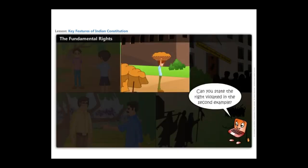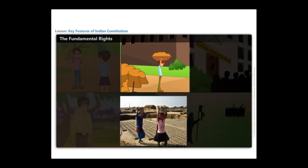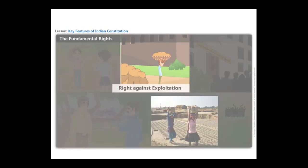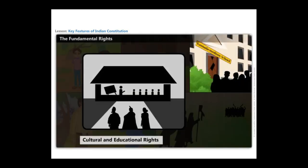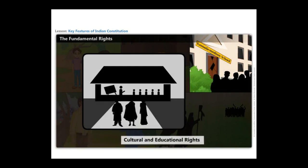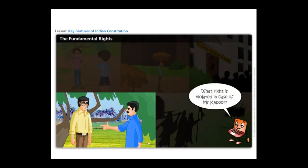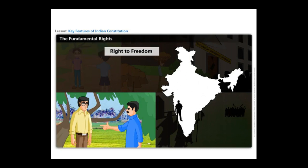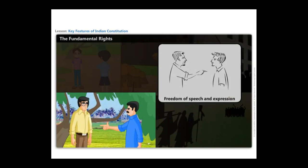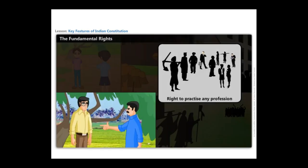The constitution prohibits trafficking, forced labour, and children working under 14 years of age through the right against exploitation. In the third instance, there is a violation of cultural and educational rights. The constitution states that all minorities, religious or linguistic, can set up their own educational institutions in order to preserve and develop their own culture. The right to freedom, which allows Indian citizens to move freely and reside in any part of the country, is violated in the case of Mr. Kapoor. Right to freedom also includes the right to freedom of speech and expression, the right to form associations, and the right to practice any profession, occupation, or business.